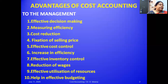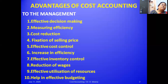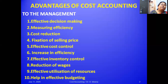The fourth advantage is fixation of selling price. Cost accounting provides information under various classifications. Based on behavior of cost, we divide cost into fixed cost and variable cost. With this information, a company can fix the selling price for their product after adding the margin of profit. Thus, cost accounting is very helpful in fixing selling prices.